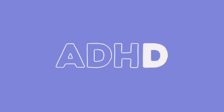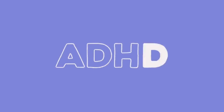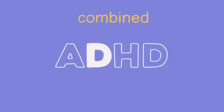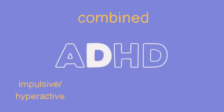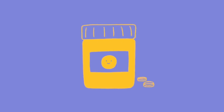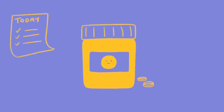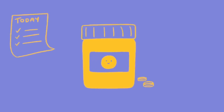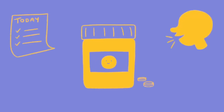Did you know there are actually three recognized types of ADHD? There is ADHD combined-type, ADHD impulsive-hyperactive type, and ADHD inattentive and distractible type. Most people think meds are the only way to control ADHD, but many people diagnosed with the disorder find relief by using a combination of medications, life coaching, education, and talk therapy.